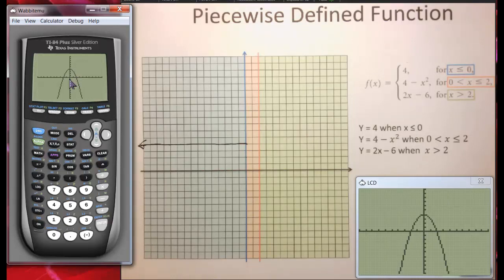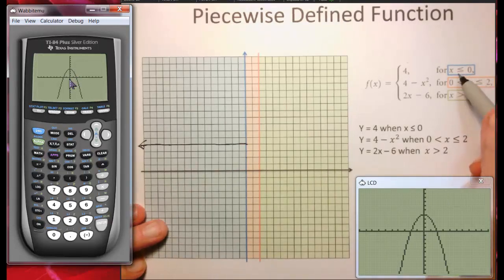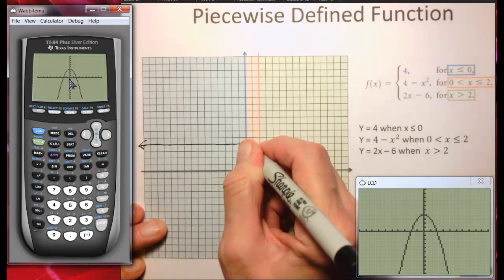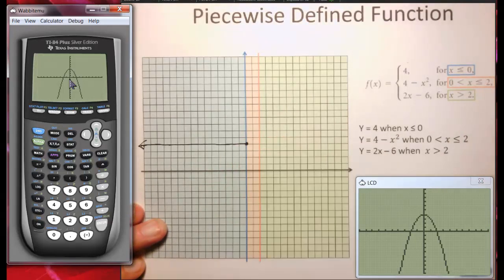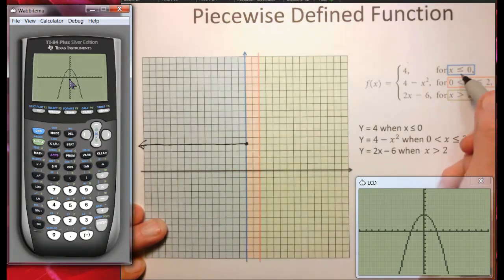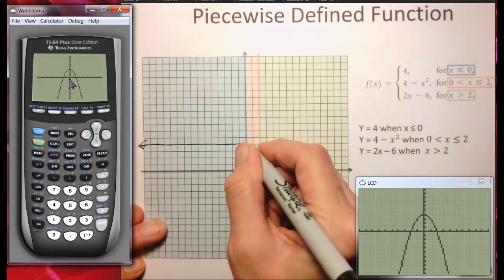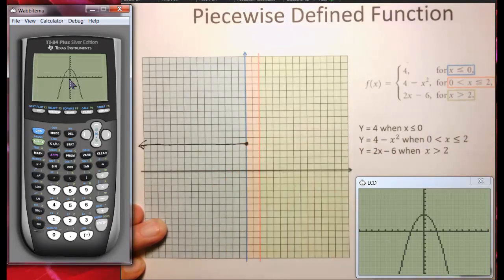Now, notice that for x less than or equal to 0, I would put a solid circle in there because x actually can equal 0. Now, for this, x can't equal 0, but putting an open circle around a closed circle is just a little silly.